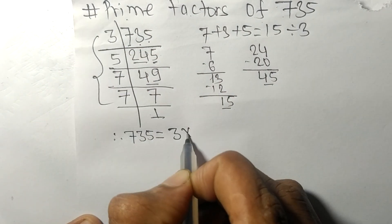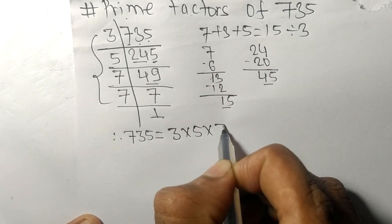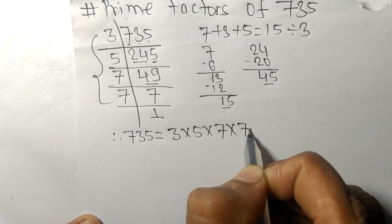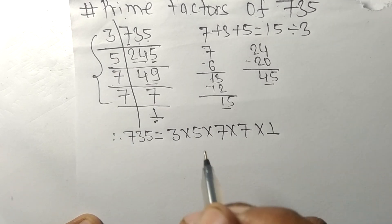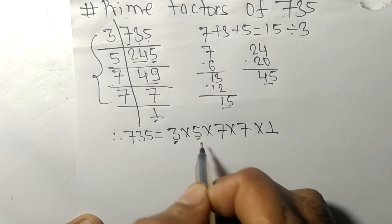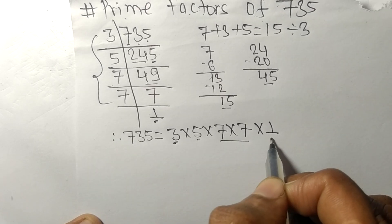From this side it is 3 times 5 times 7 times 7, and from here it is 1. So the prime factors are 3, 5, 7, and 7.